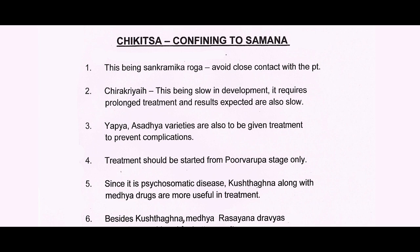Coming to Chirakriya — this being slow in development, it requires a prolonged line of treatment and results expected are also slow. In that context, it is named as Chirakriya. Then Yapya — Asaja varieties are also to be taken for treatment to prevent complications. It is not wise on the part of a physician to leave the patient without treatment. A physician should treat the case based upon the condition and requirement of treatment. Treatment should be started from the Pururupa stage only — then it is very easy to tackle the disease.